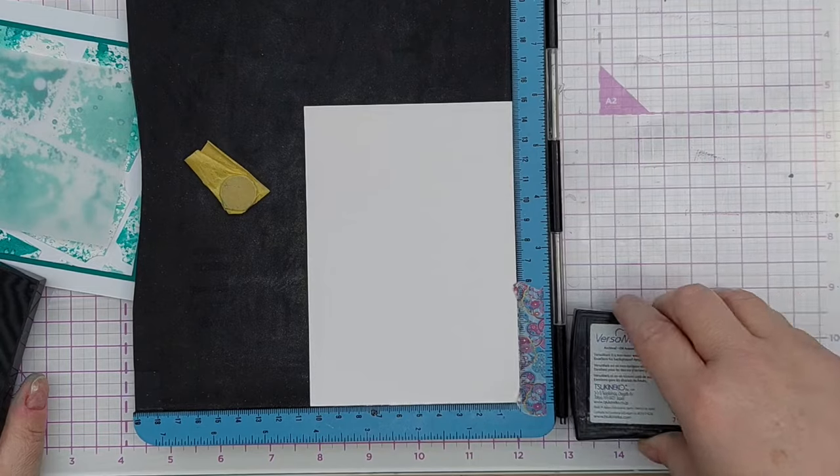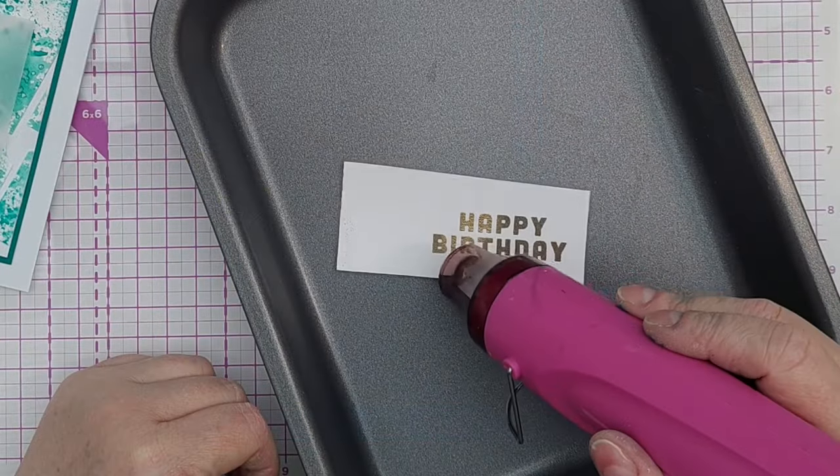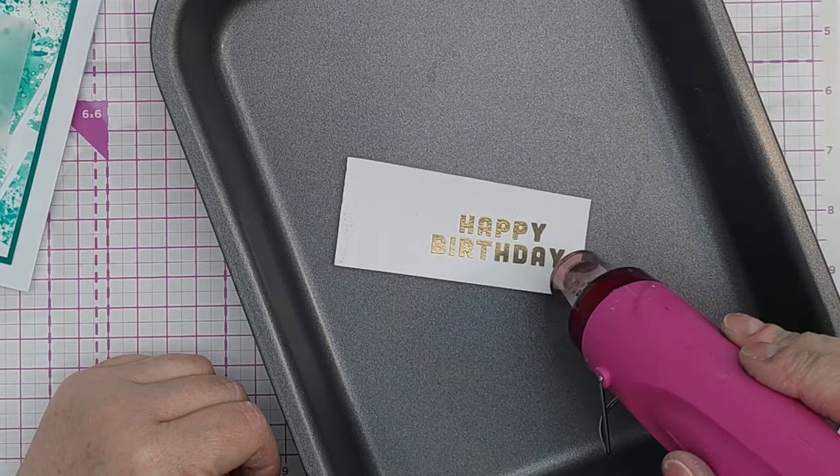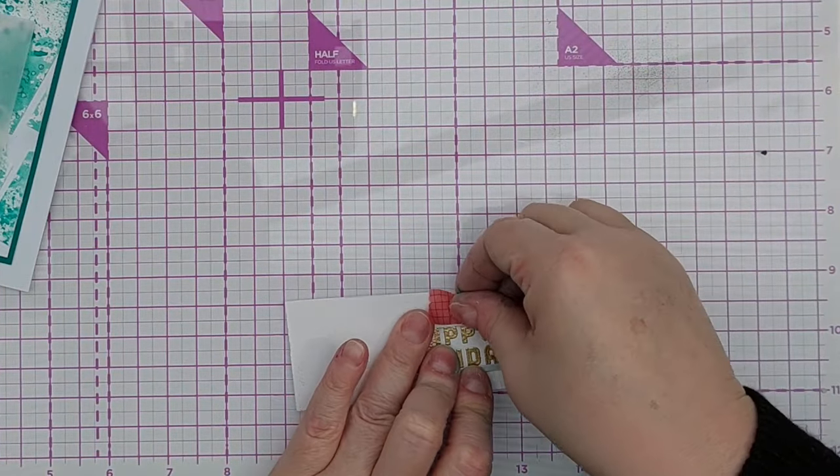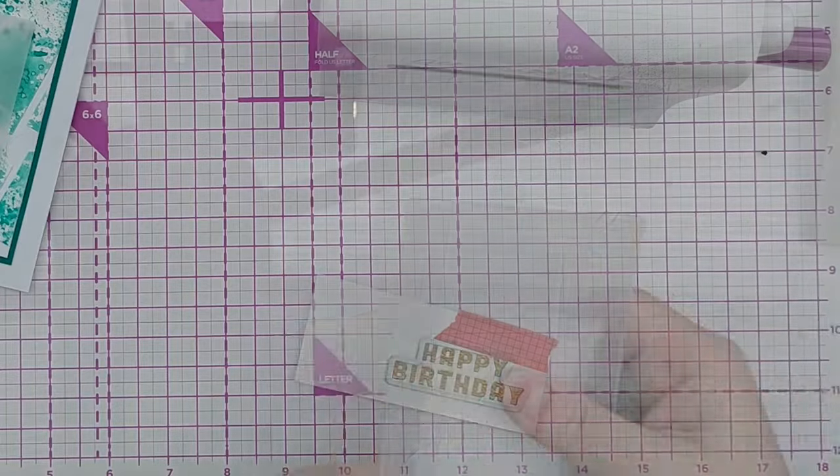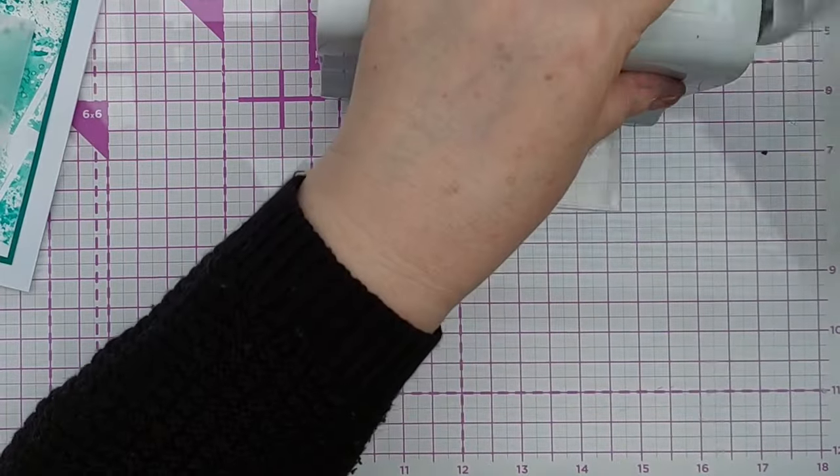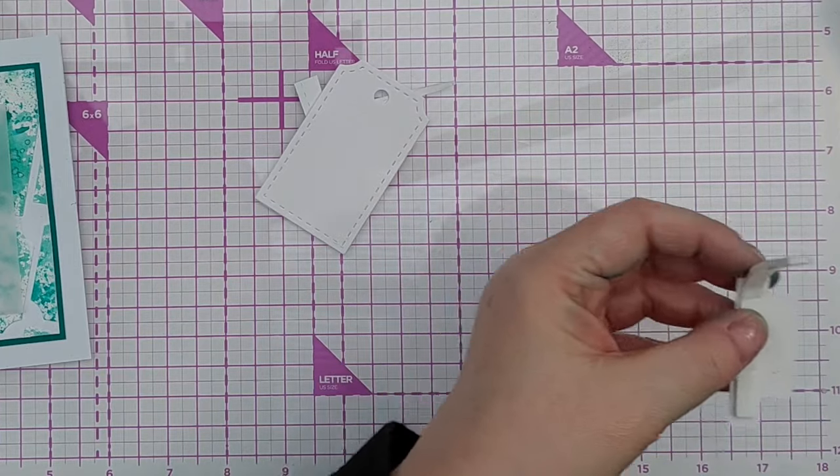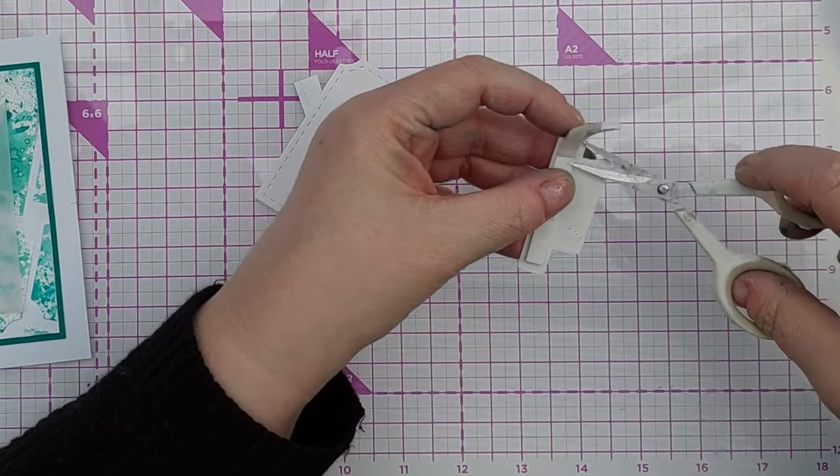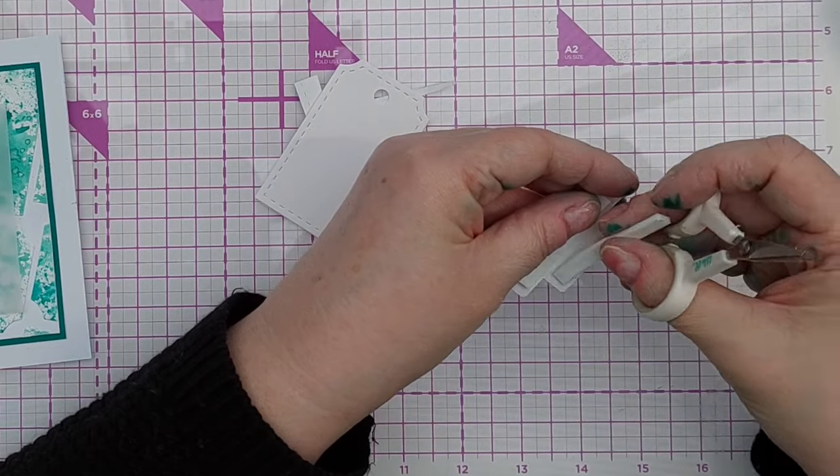For my sentiment I'm using a happy birthday stamp that I heat embossed in gold. I then used the coordinating die to cut it out. I did pop a bit of deli paper in with the die when I ran it through the machine, just to protect the embossing from the scratches on the cutting plate.